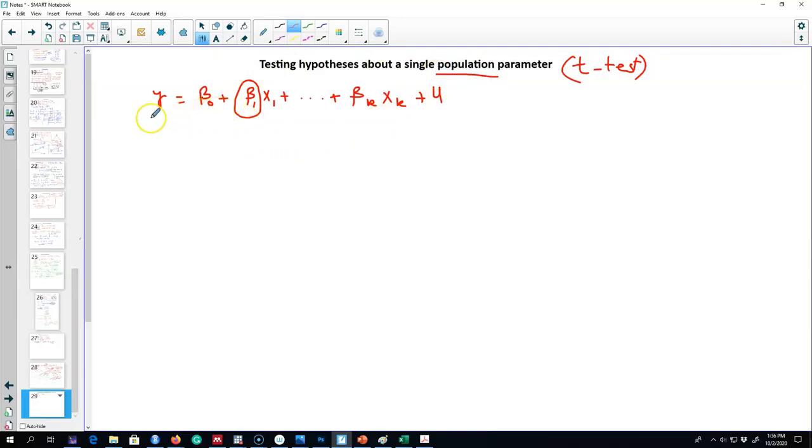This is a population regression line. Our estimated line will look something like this. These beta coefficients, the population parameters, are unknown. So we have to hypothesize about the value of these beta j coefficients.